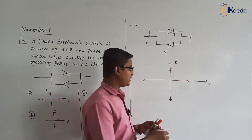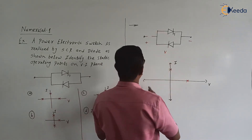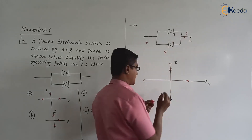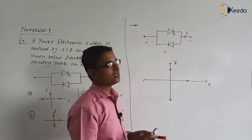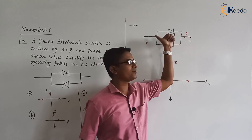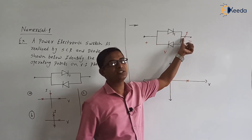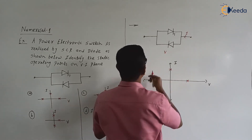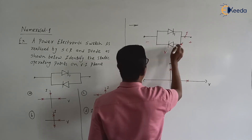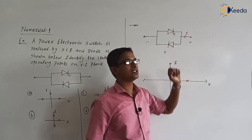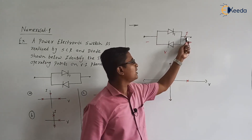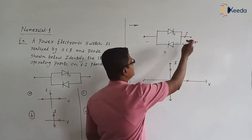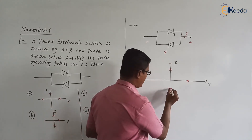Next, let us discuss for the reverse current — the opposite direction current, that is from right to left. Whether SCR allows the reverse current? No. But this reverse current of the switch is nothing but the forward current for the diode. So the diode is allowing the forward current. This current is reverse for the SCR and for the overall switch combination. So the reverse current will be passing through the diode. If we consider this combination as a single switch, this switch is allowing the reverse current.